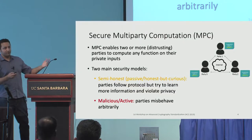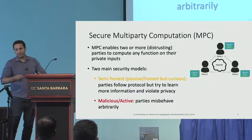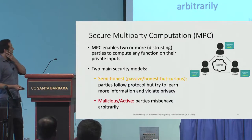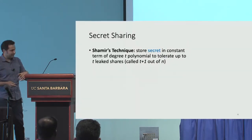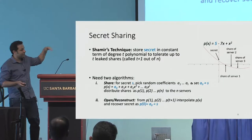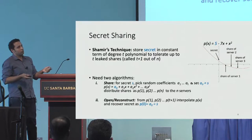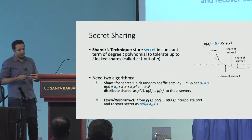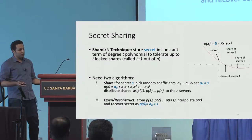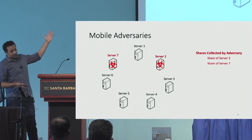Obligatory slide on MPC: a protocol that allows a bunch of mistrusting parties — typically software — to compute a function under private input. Historically the semi-honest passive model cares more about privacy, and the active or malicious model is where you can have cheating and arbitrary deviation from the protocol. I want to show you secret sharing — share and reconstruct — formalized in EasyCrypt, to convey that this is possible. MPC is an advanced cryptographic primitive and it's not straightforward to implement, especially in the malicious and active setting and with adaptive adversaries.